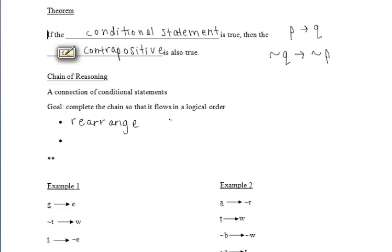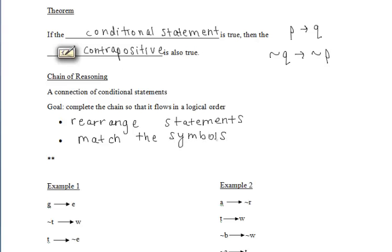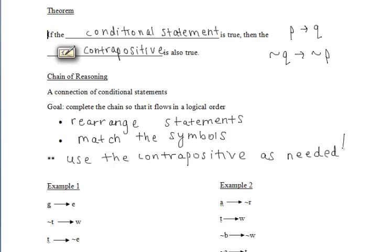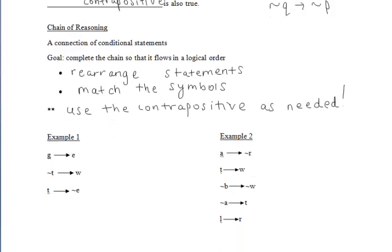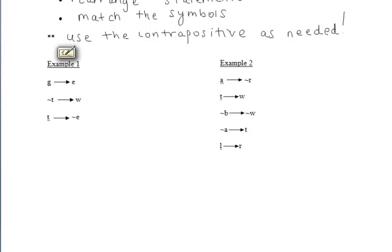I will ask you to complete a chain of reasoning, which is a connection of conditional statements. To do so, first rearrange the statements and match up the symbols so they flow in a logical order. You may have to use the contrapositive as needed — taking the contrapositive of conditional statements is valid because if the conditional is true, its contrapositive is also true.